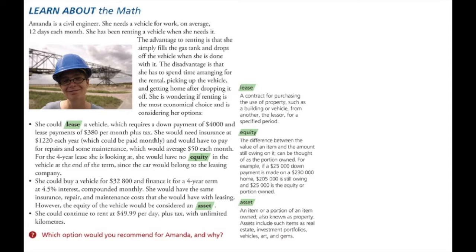In this situation we have Amanda, she's a civil engineer. She needs a vehicle for work on average 12 days a month. Obviously she would live in a larger city that has a robust public transport system, whether that's buses, cabs, subways, etc.